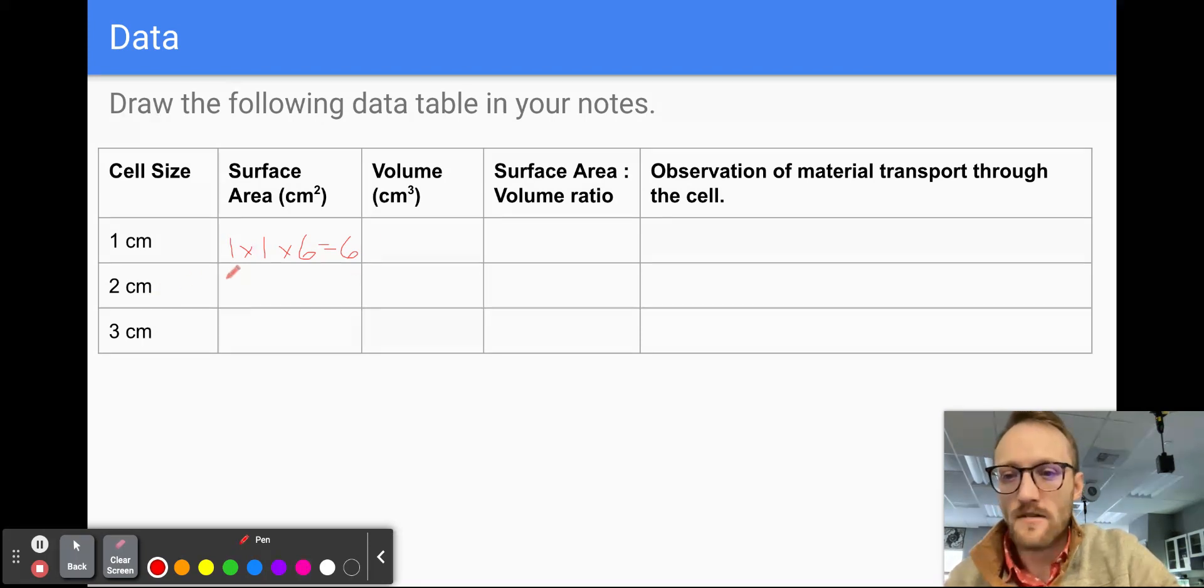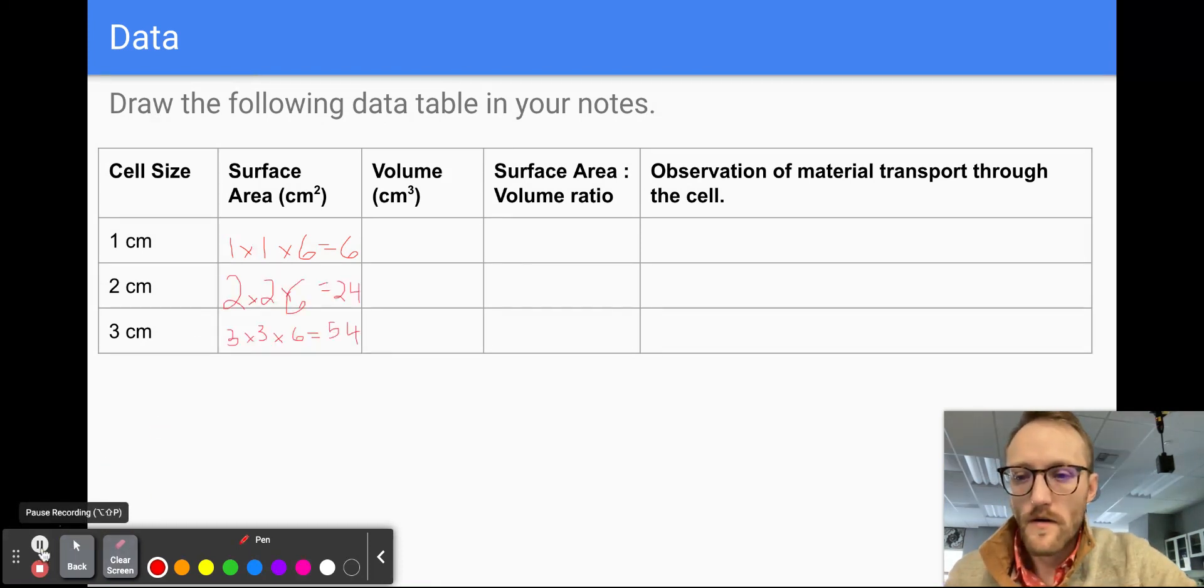So we can go through and do the same thing here. So follow that same process and add those into your data table for surface area. So hopefully you were able to add those in there. So we see two times two times six equals 24 centimeters squared. And then three times three times six equals 54 centimeters squared. So we can see that our surface area is going up.